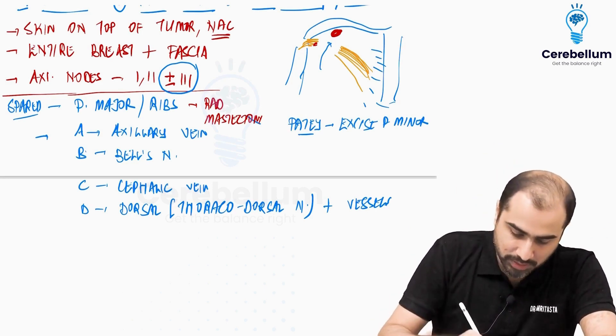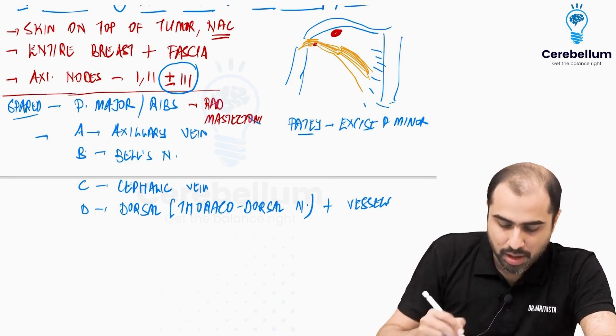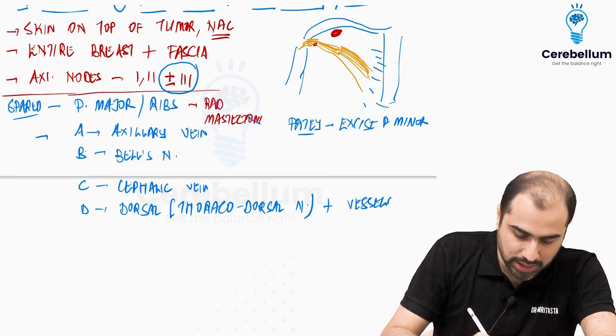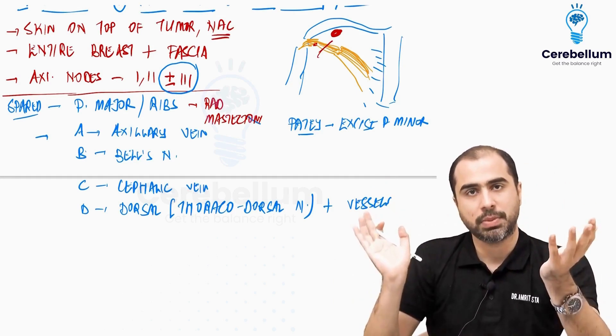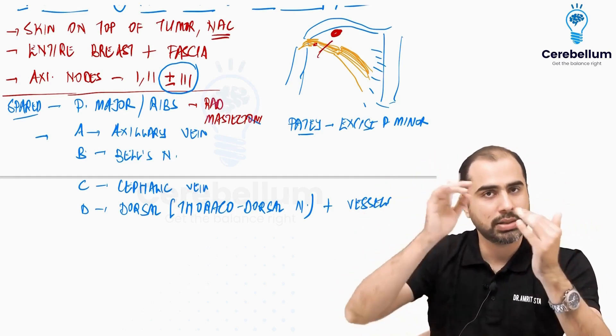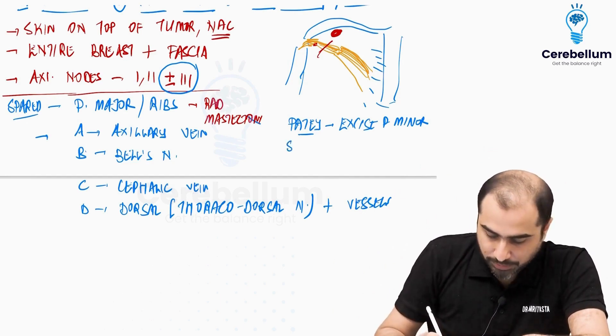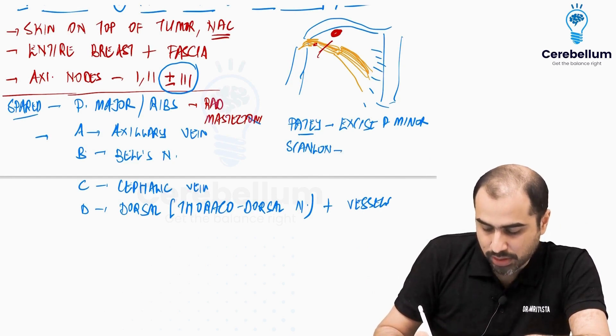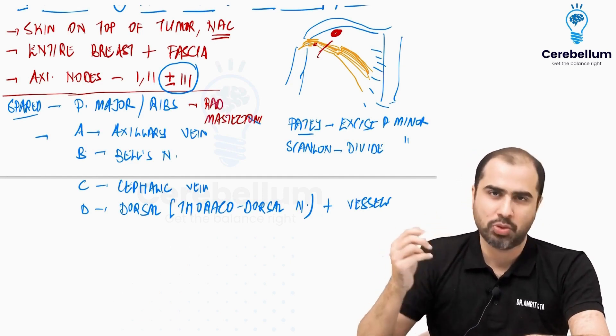Then came another surgeon who said, to remove the apical node, I don't have to excise the pec minor. What I can simply do is, I can just cut it, divide it, so that the muscle splits, then go and remove the node and stitch the muscle back. That was called as Scanlon's modification. What Scanlon said was, just divide the pec minor and then remove the node and suture it back to remove the level 3 node.